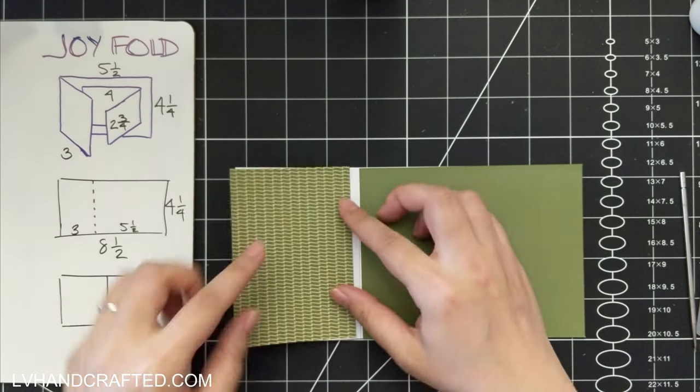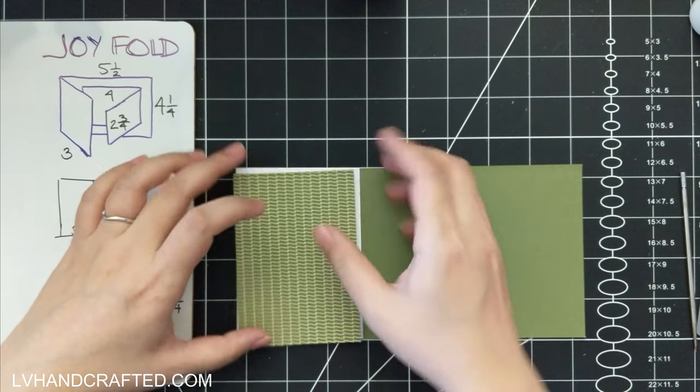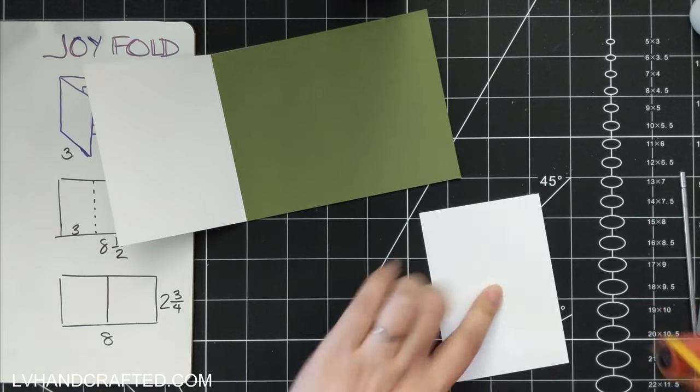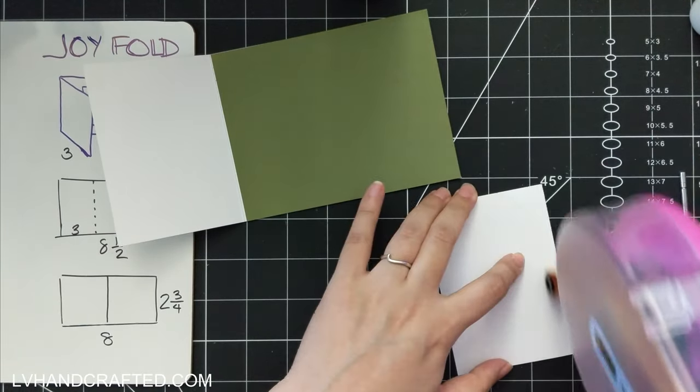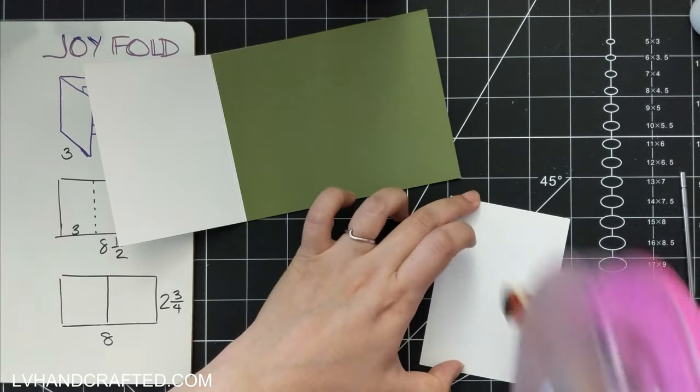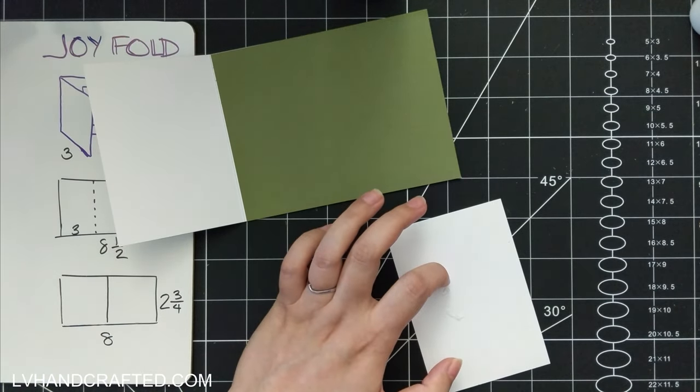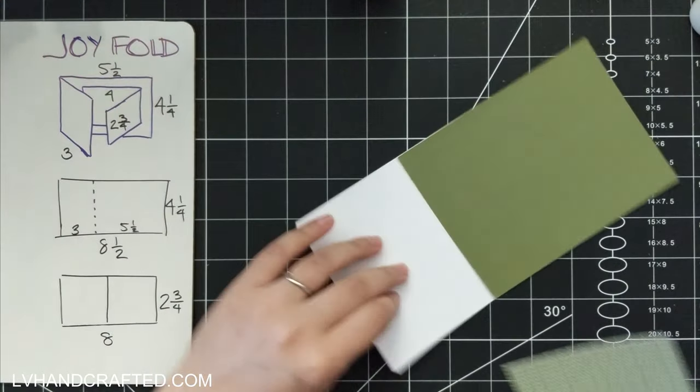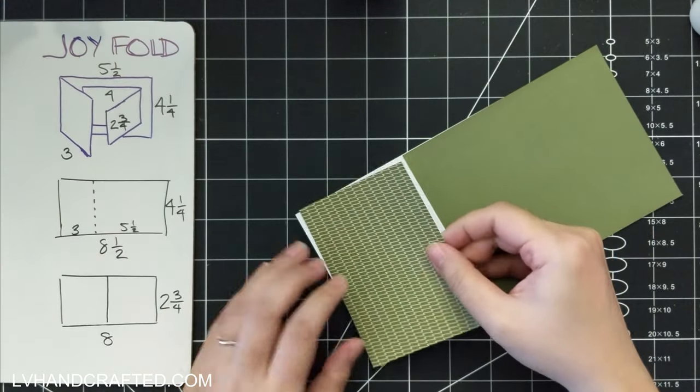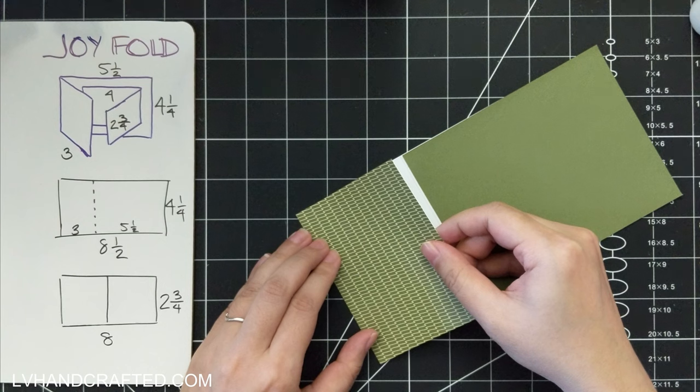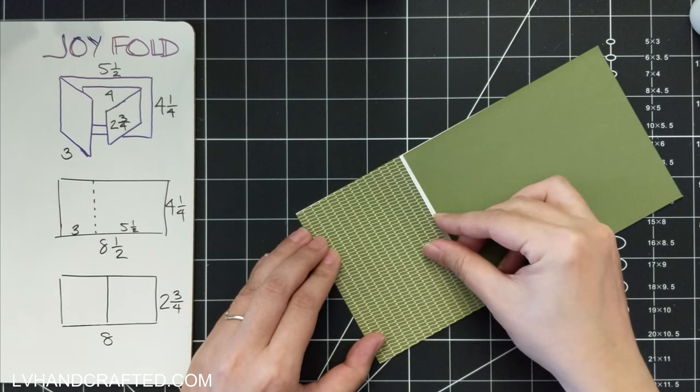For the mats and layers, this we're looking at is the inside of the card, and I decided I want my colored cardstock and patterned paper to go all the way to the edge.